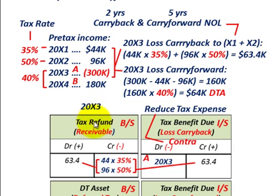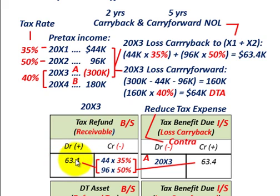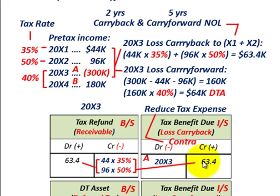Let's look at how we'd record year 20x3. We start with the tax refund receivable because we already paid taxes on this income in 20x1 and 20x2. So we debit our tax refund receivable on our balance sheet for $63,400 — that's $44,000 times 35% for year 20x1 and $96,000 times 50% for year 20x2. Then we credit the tax benefit due on our income statement for the loss carry back for $63,400, as this is a contra account that reduces tax expense.